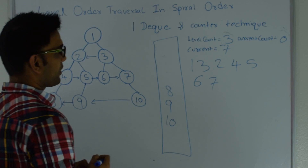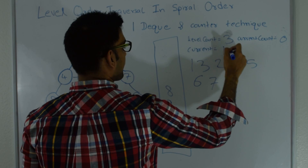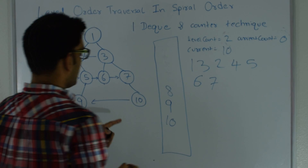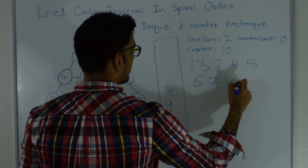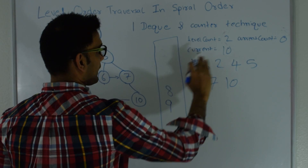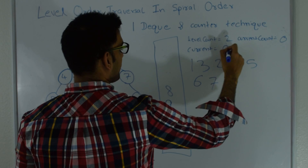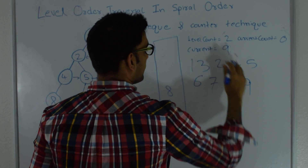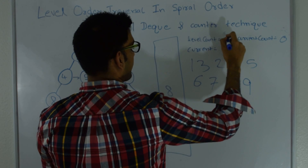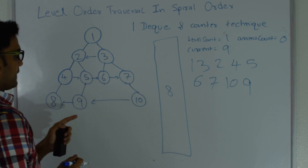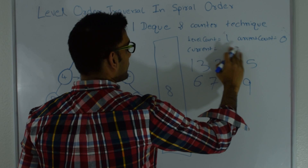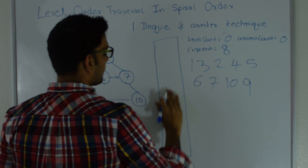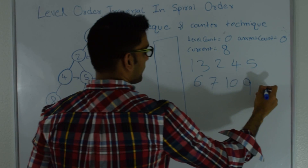I pop 10 from the bottom — current becomes 10; level count decrements to 2; no children; print 10. Pop again — current becomes 9; no children; print 9; level count becomes 1. Finally, current becomes 8; level count becomes 0; no children; print 8.